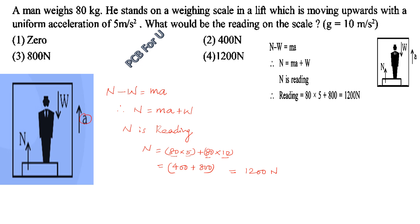So: 80 into 5 equals 400, plus 80 into 10 equals 800. So N is equal to 1200 newton. N is equal to the reading of the weighing machine.